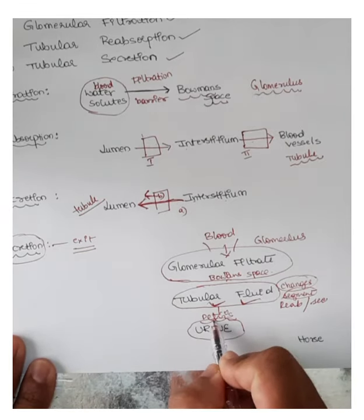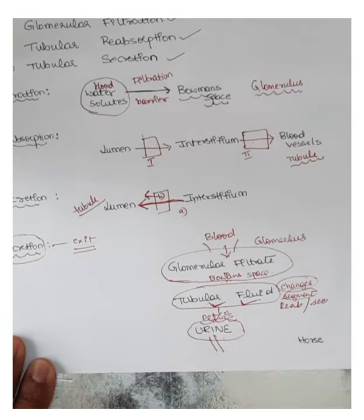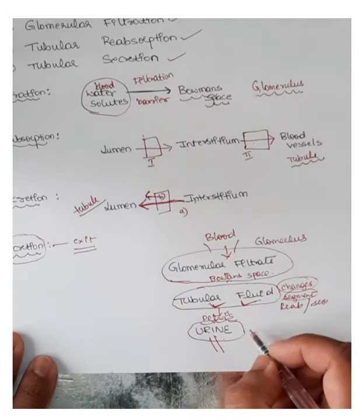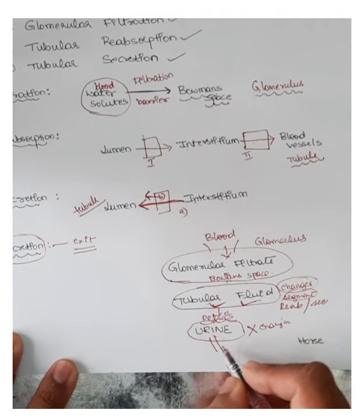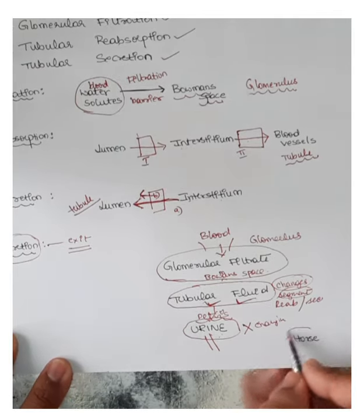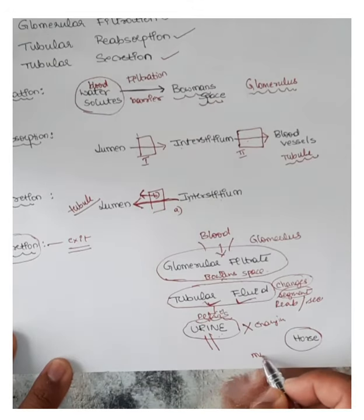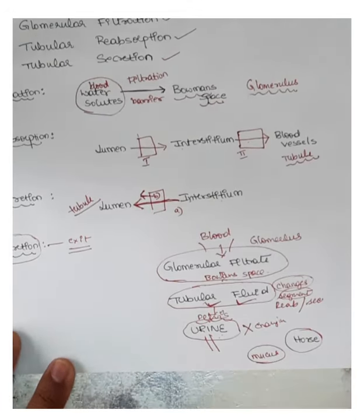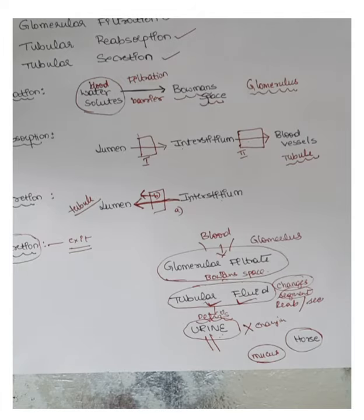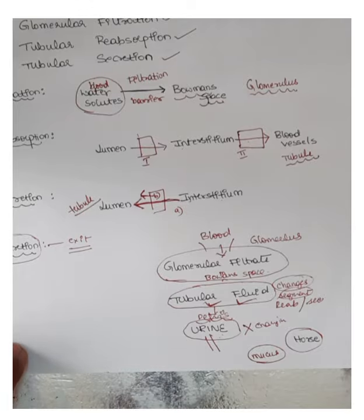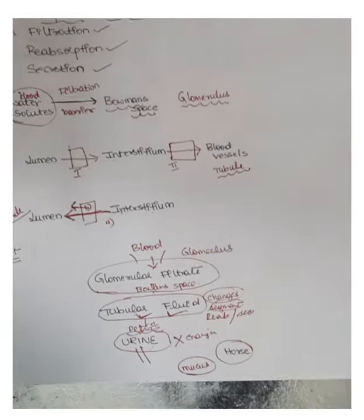Once in the pelvis, passing through the ureter and into the bladder, there is no change in the composition of the urine — except in the case of the horse, where mucus can be added in the urethra during the maturation process. Before going into detail on glomerular filtration, we need to know a few terminologies.